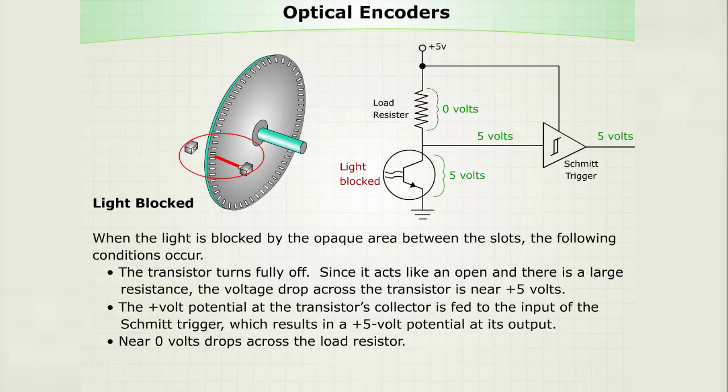The positive volt potential at the transistor's collector is fed to the input of the Schmitt trigger, which results in a positive five volt potential at its output. Near zero volts drops across the load resistor.